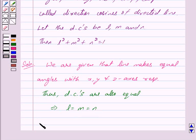Now from key area we also know that L square plus M square plus N square equals 1.